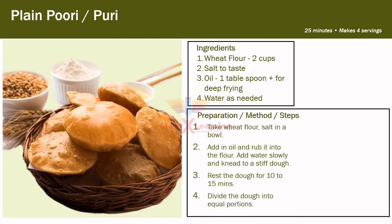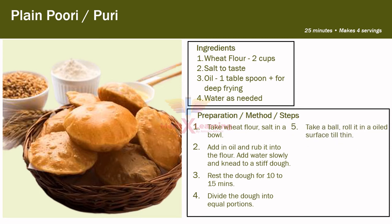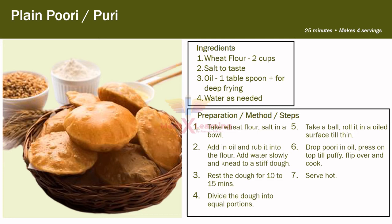Step four: divide the dough into equal portions so that we can make equal Puris. Step five: take a ball and roll it on an oiled surface until thin. Step six: drop the Puri in oil, press on top till puffy, then flip over and cook. Step seven: serve hot.